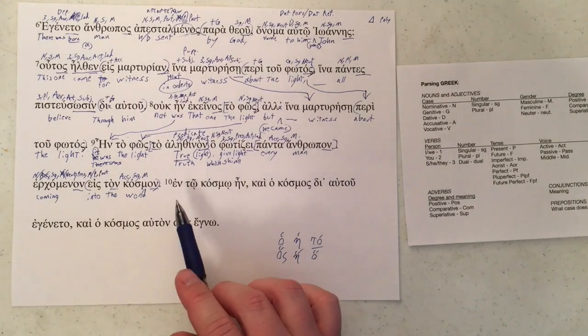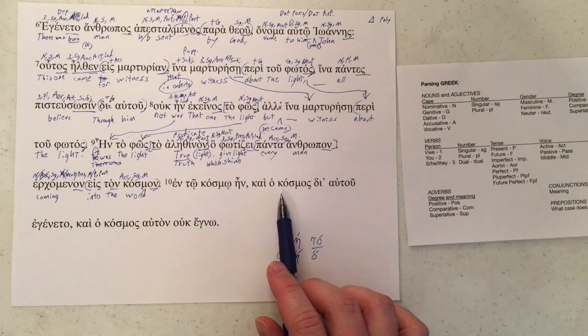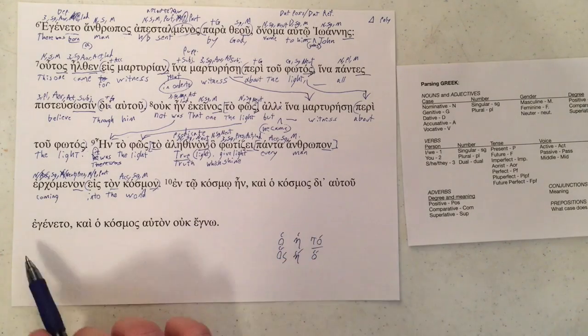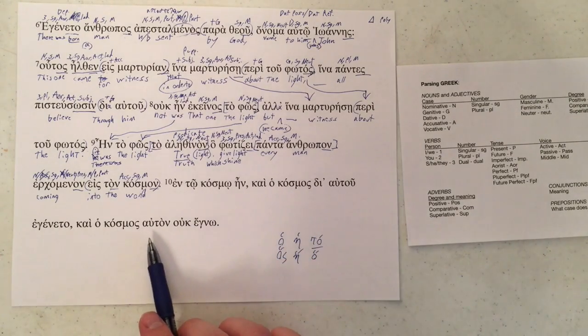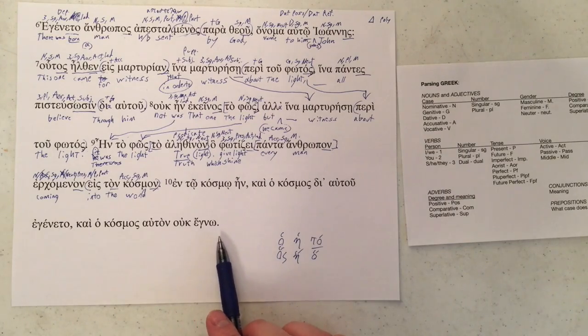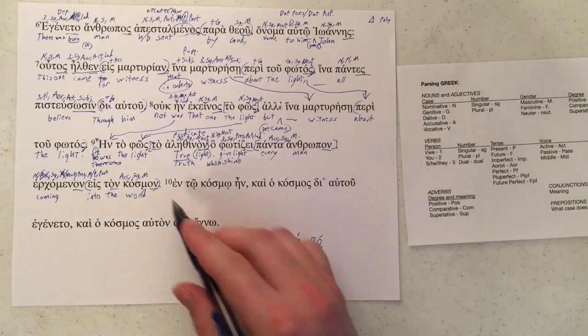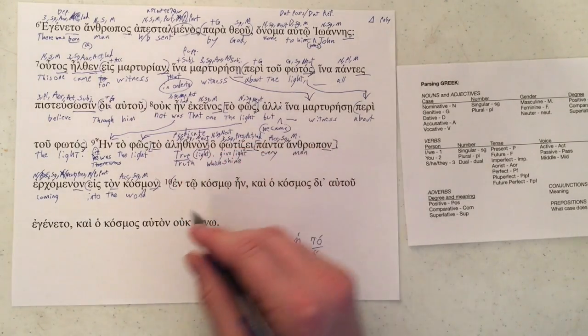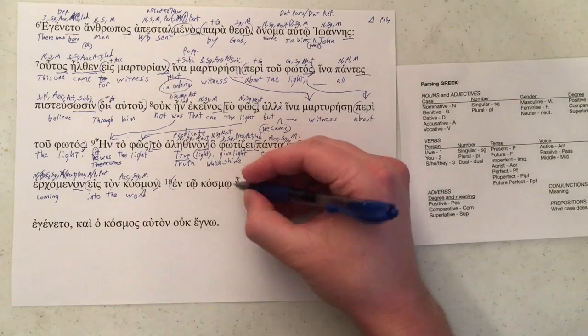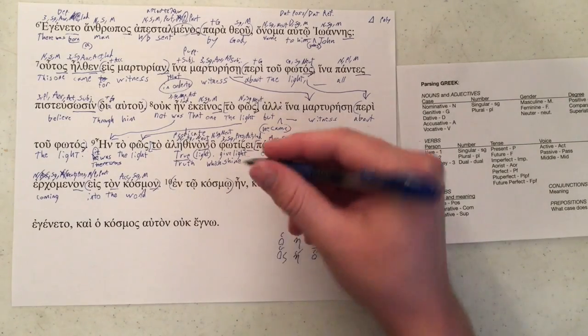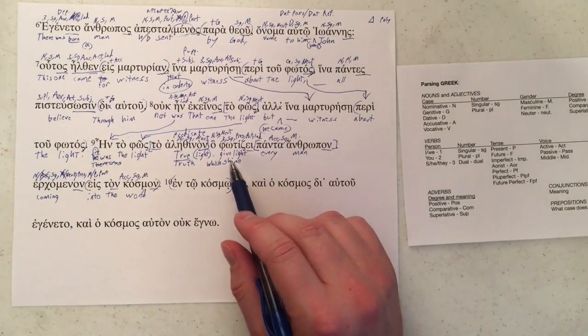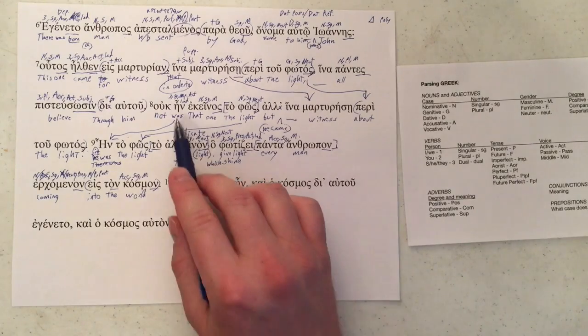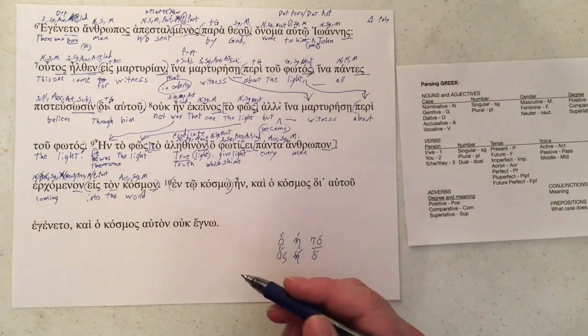All right, so very first thing in this line we have here is a prepositional phrase, en toi kosmoi, ein is a verb. So I'm going to close the prepositional phrase there. Ein we've already parsed earlier, and it looks like we've got one right there and right there, so we don't need to do it again.